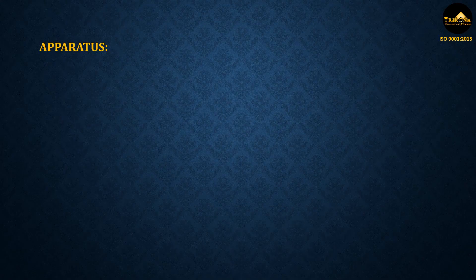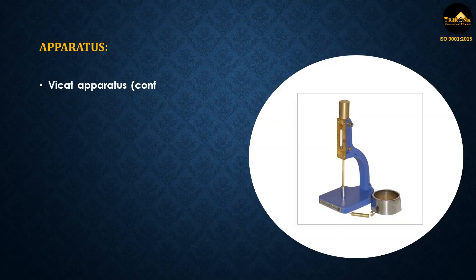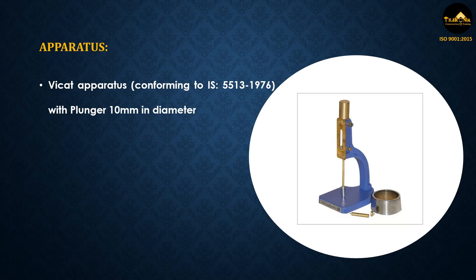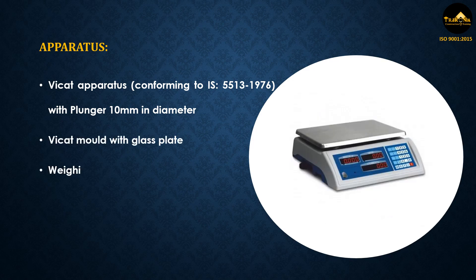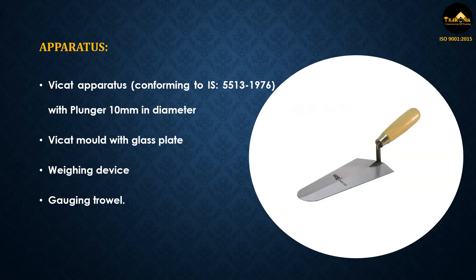Apparatus: Vicat apparatus conforming to IS 5513 to 1976 with plunger 10 millimeters in diameter. Vicat mold with glass plate. Weighing device. Gauging trowel.